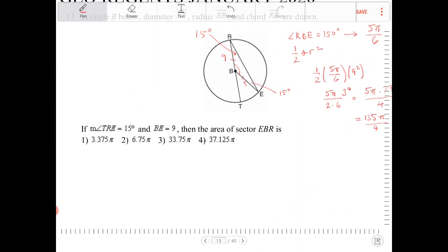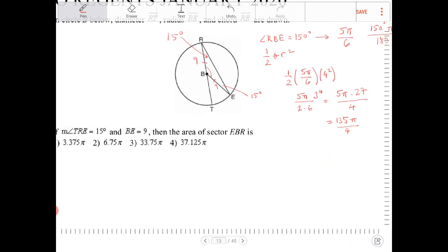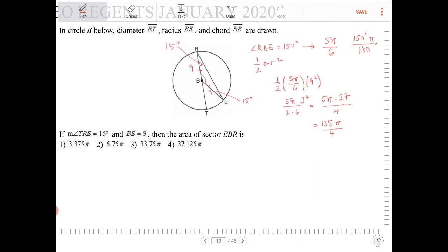Which is, they give it to you in decimal, but then they give it to you also in pi. So 135 is equivalent to, what is that, 33.75. So it's going to be 33.75 pi. It's going to be that.